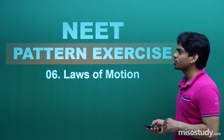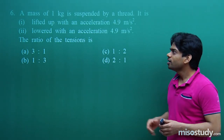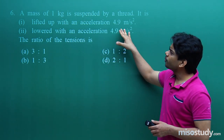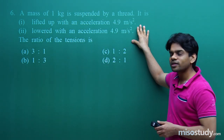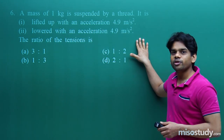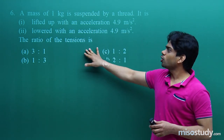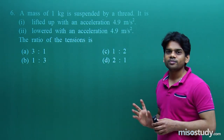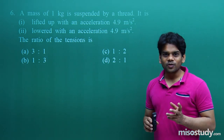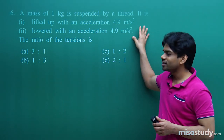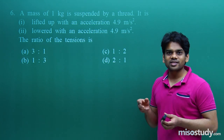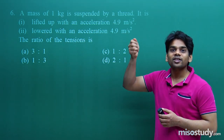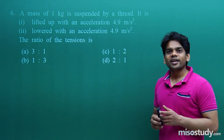Let's go ahead with the sixth question. A mass of 1 kg is suspended by a thread. It is first lifted up with an acceleration of 4.9 m/s², then lowered with an acceleration of 4.9 m/s². The ratio of the tension is: A) 3:1, B) 1:3, C) 1:2, D) 2:1. A block is suspended by a string — once you are lifting it up, and once you are bringing it downward.